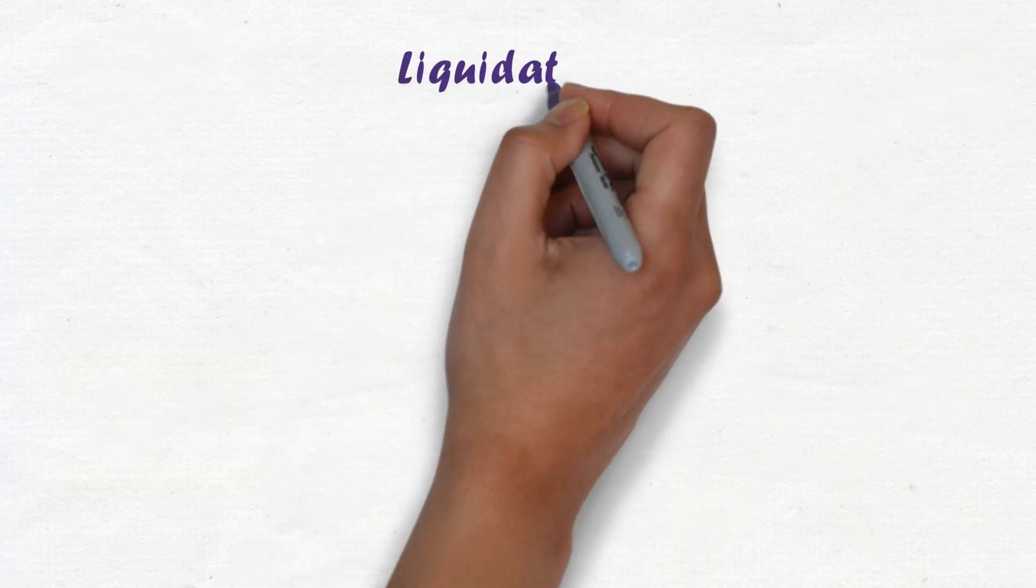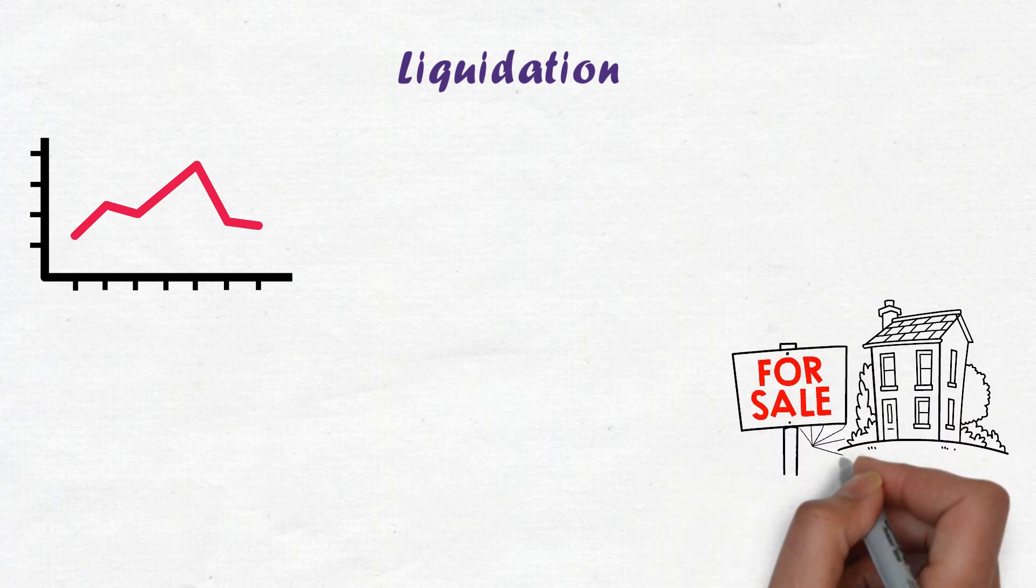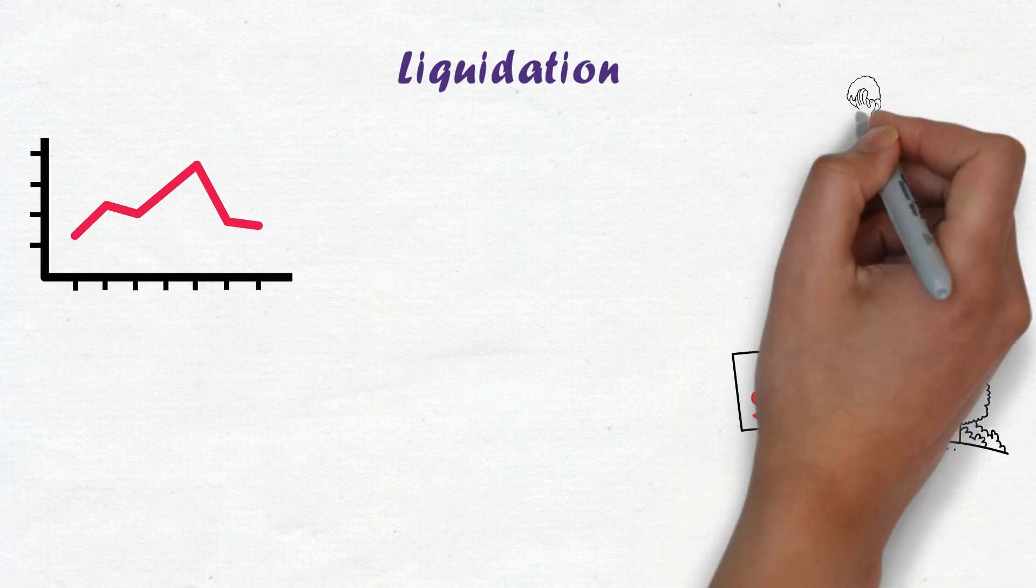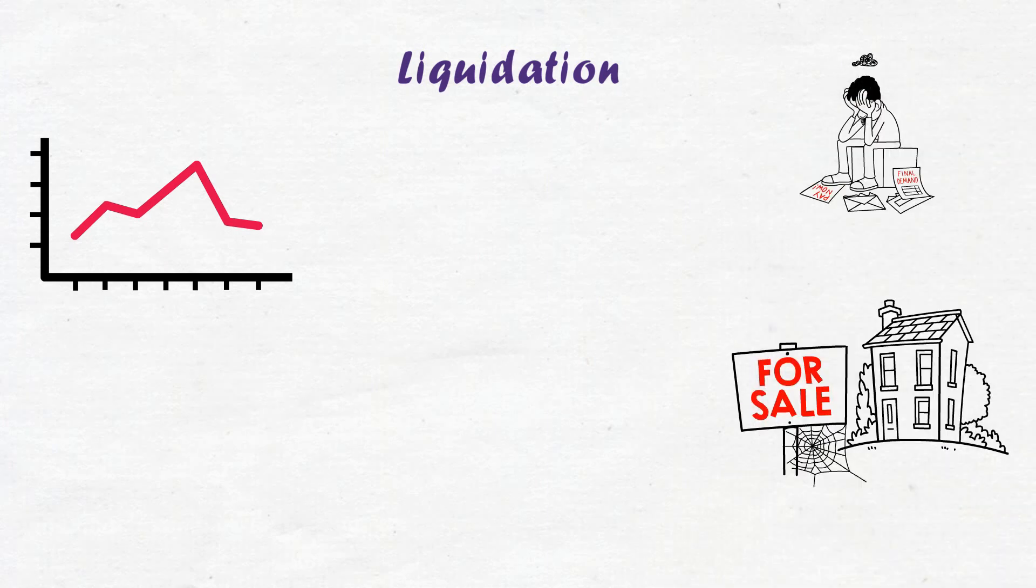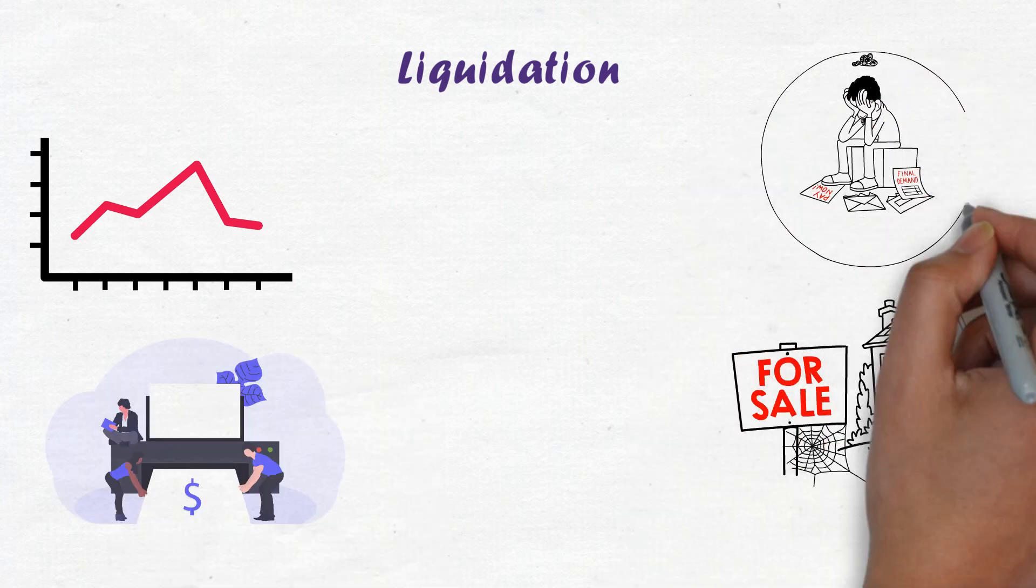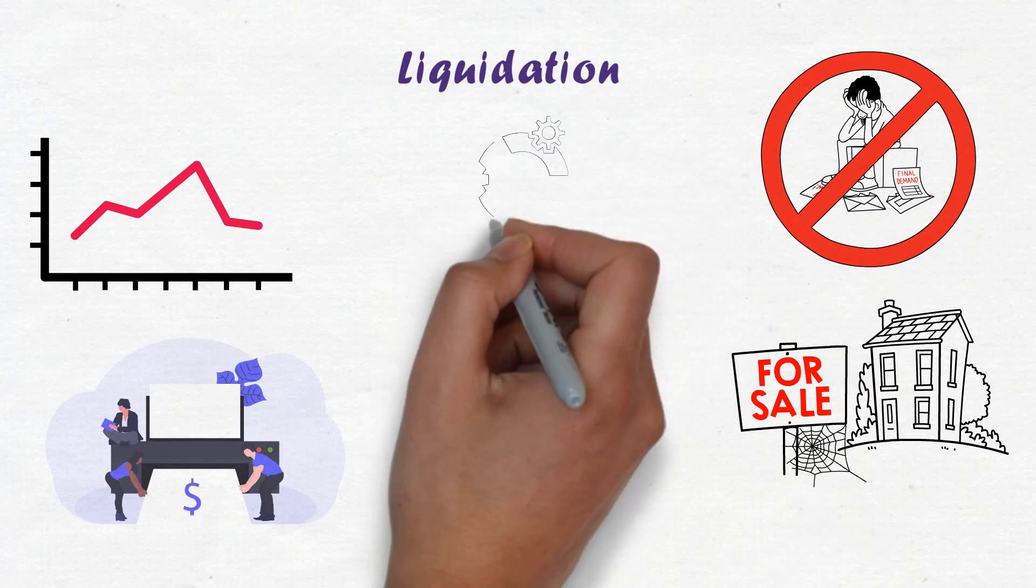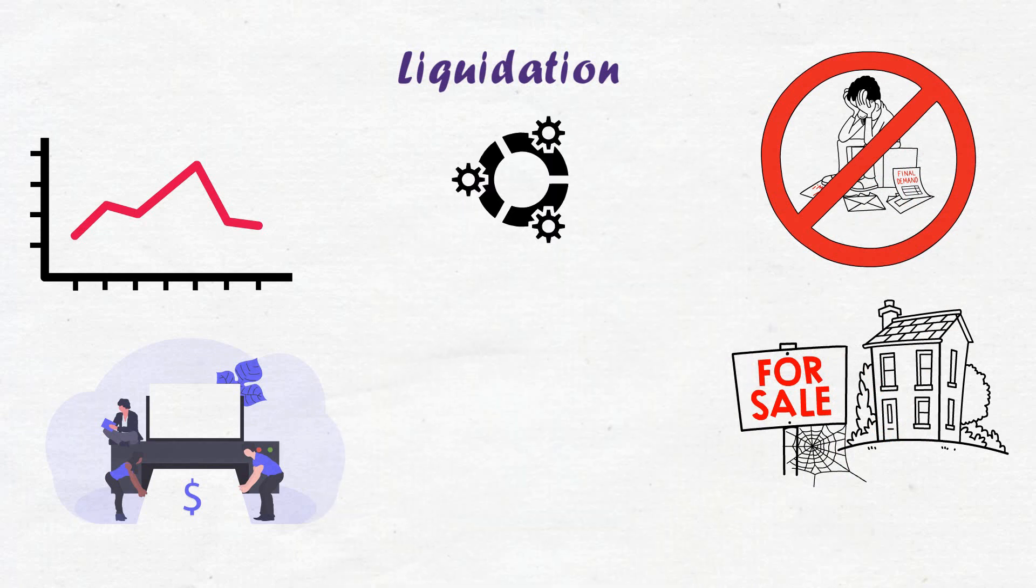Let's move to our final exit strategy, which is liquidation. Liquidation as an exit strategy will often generate low returns. Liquidation entails the closing of a business through the sale of all its assets. The strategy is often used when a business cannot be sold through any of the other methods. The company will be sold off in parts like plant and machinery, real estate, marketable securities, buildings, etc.